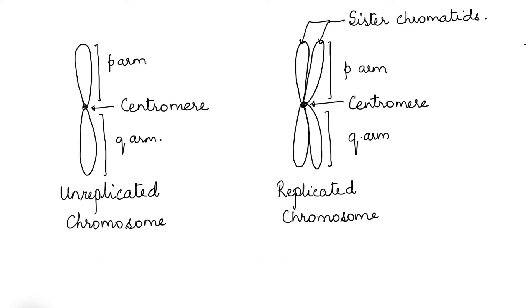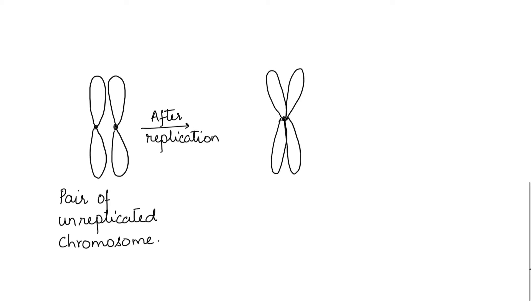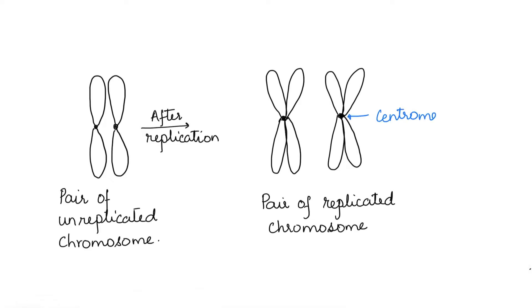Let's now consider a pair of chromosomes. Here I have drawn an unreplicated homologous pair of chromosomes. After replication the pair appears like this. Thus we can see two chromosomes of same size and shape. Each has replicated hence has two chromatids connected by a centromere.